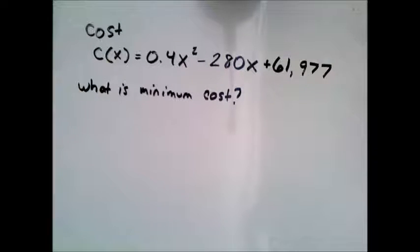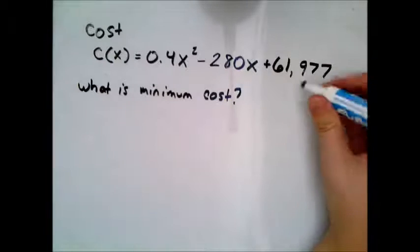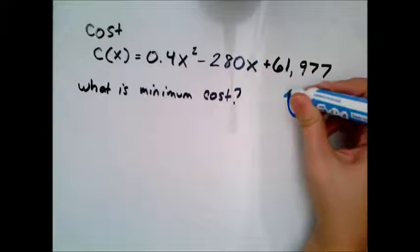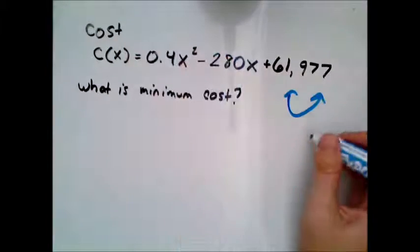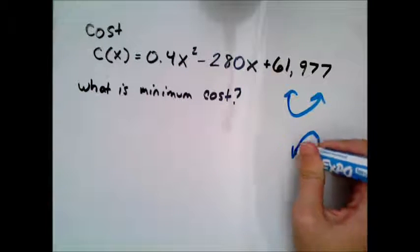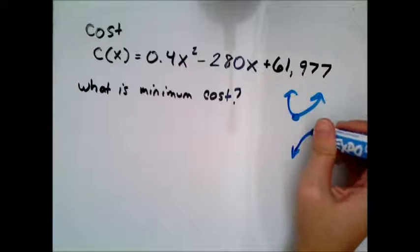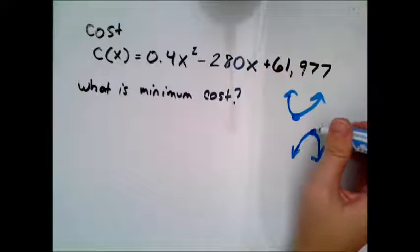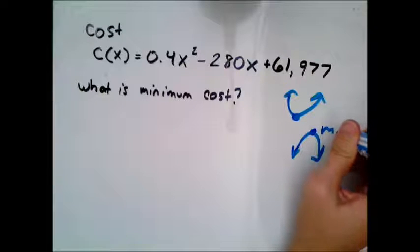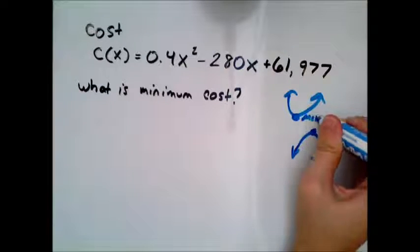So that means it's quadratic and when I graph it, it'll look like a parabola. Now this one I can tell it opens up because it's positive out front, but regardless of which way a parabola opens determines whether the point you're looking for is going to be a maximum point or a minimum point.